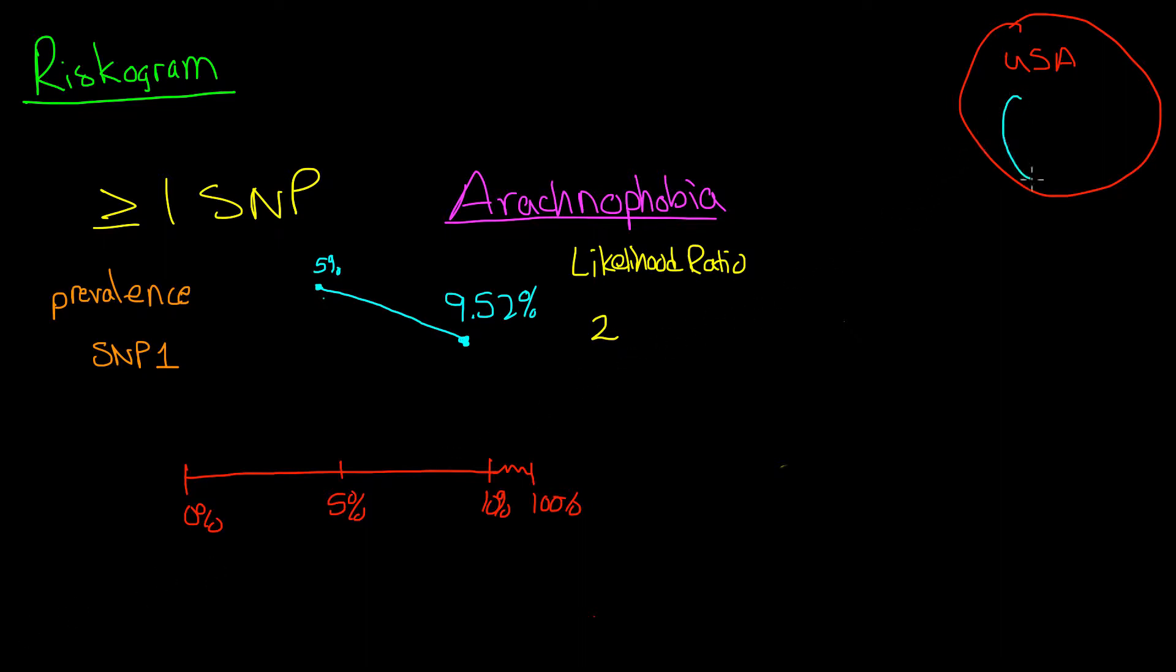Now when we narrow that down to a subset of the United States, we're only looking at people with SNP1. Well it turns out that SNP1 increases people's risk of developing arachnophobia. And we calculated that using the likelihood ratio.